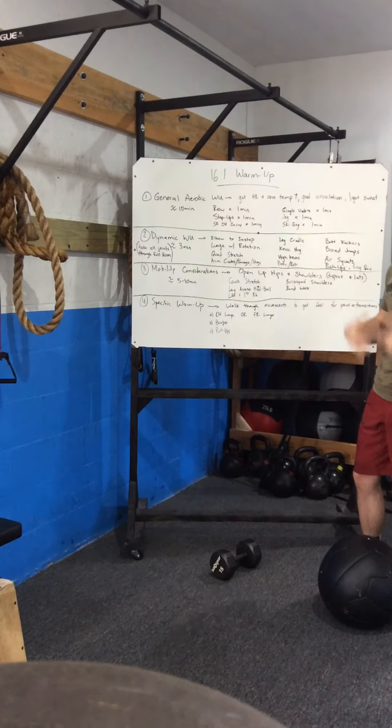So the stationary things—arm circles, arm swings, arm hugs—think 10 to 15 repetitions, just something to get some good dynamic range. The stuff where you're moving back and forth, just like we do here in the gym, maybe 40 feet down for one movement and then 40 feet back for another movement. Same stuff that you do if you come into our gym on a daily basis.